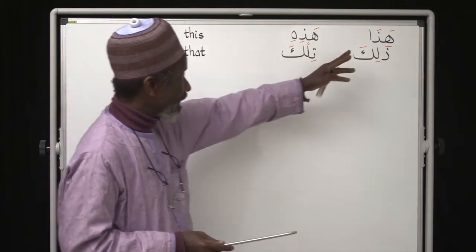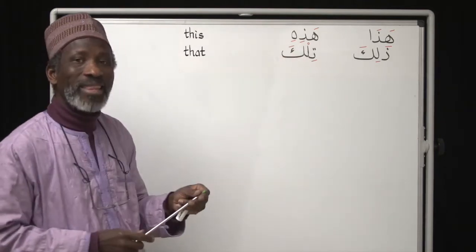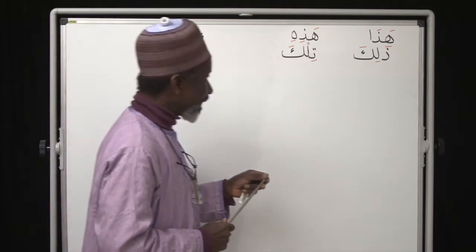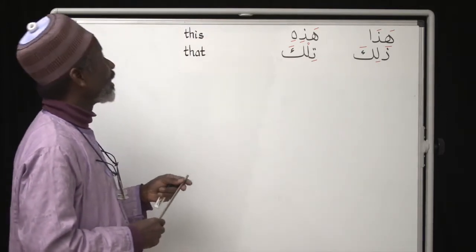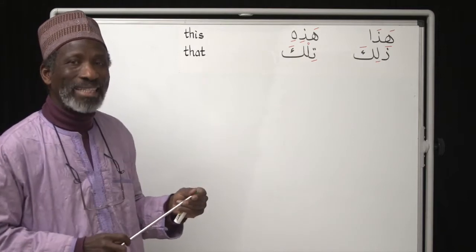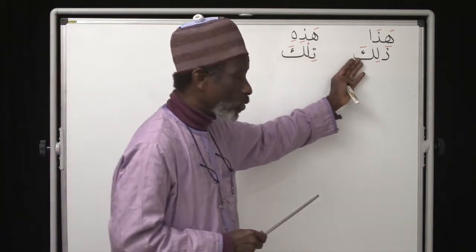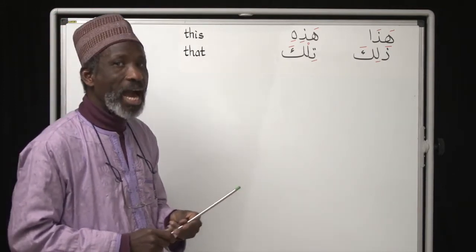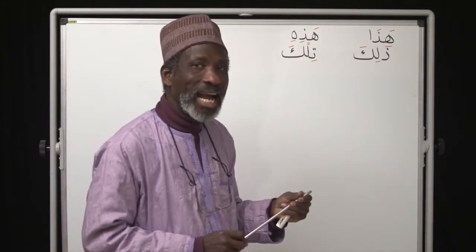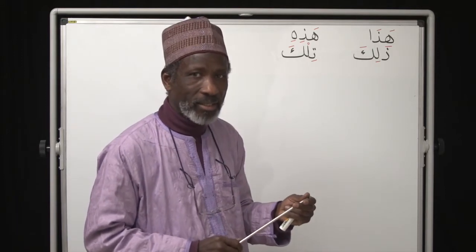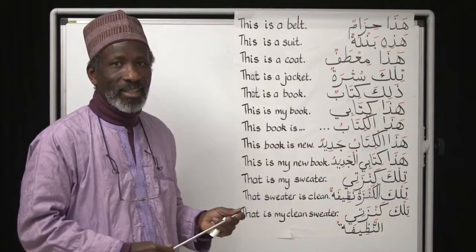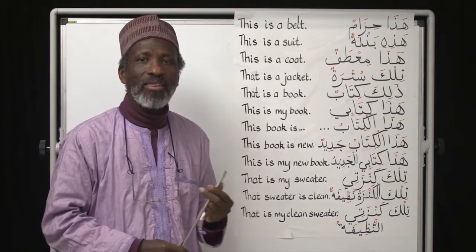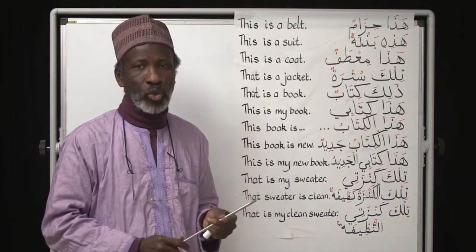So hādhā and hādhihi both mean 'this is' or 'this.' Dhālika and tilka mean 'that' or 'that is.' Dhālika is for masculine, tilka is for feminine. Now let's put hādhā, hādhihi, dhālika, and tilka into practice.